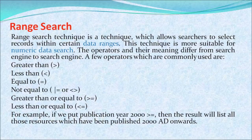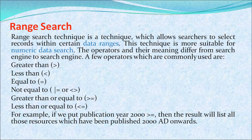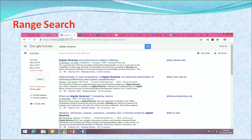Range search is a technique which allows the searcher to select records within certain data ranges. This technique is more suitable for numeric search data. The operators differ from one search engine to another; commonly used operators include greater than, less than, equal to, not equal to, and greater than or equal to. For example, if we put 'not equal to 2000' for publication year, we will get publications only after the year 2000.